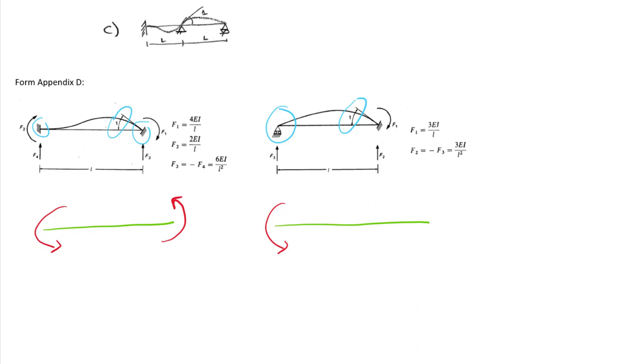Here the end that's being rotated is F1 right here. And so that's the value that goes right here for EI over L. The other end is F2 and that's the value that comes here, 2 EI over L. On the right-hand member, the value of the moment F1 corresponds to the end that's being rotated, 3 EI over L.